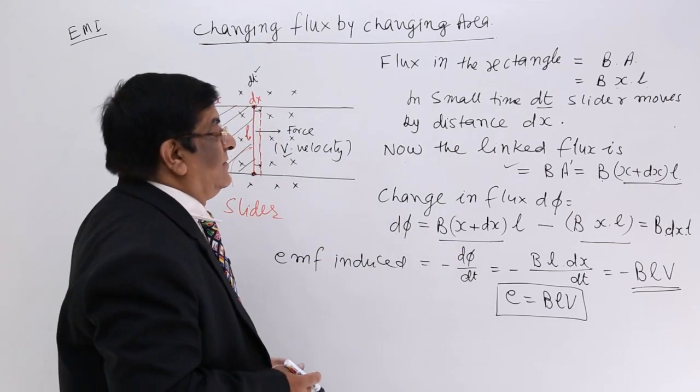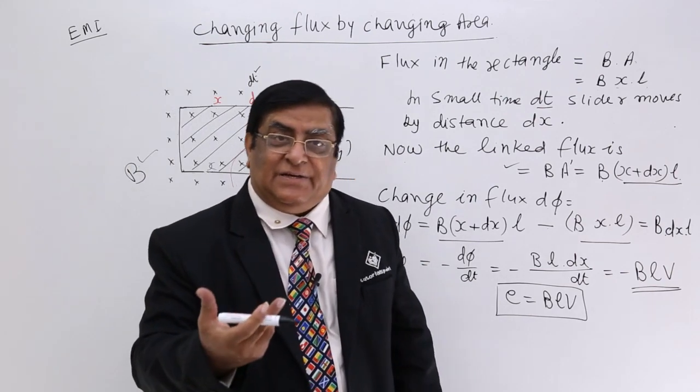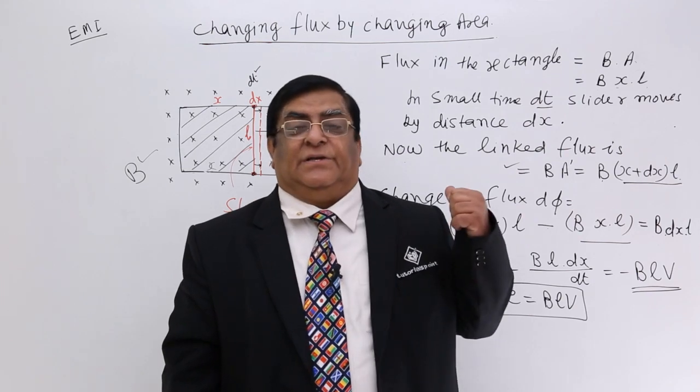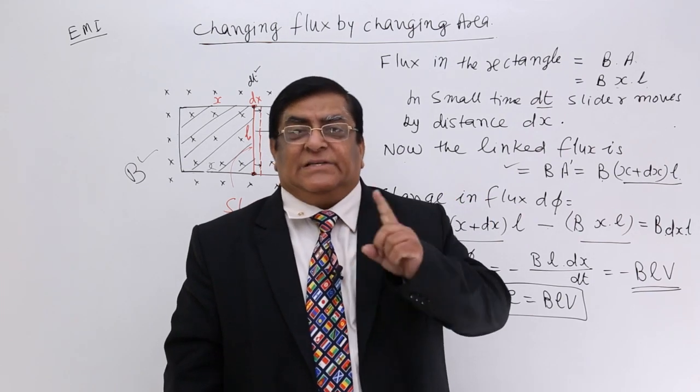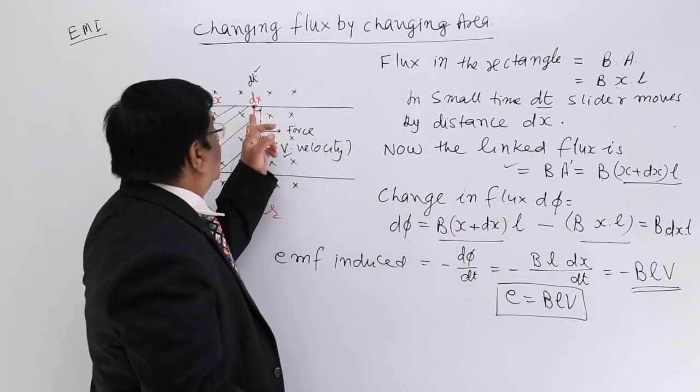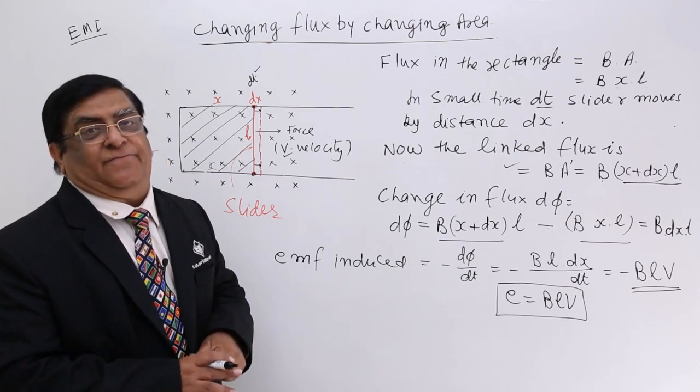So the emf produced by change of area is this, and in the next lecture we will see the direction of induced emf. This emf is due to motion of the rod, due to motion of this rod, therefore we call it motional emf.